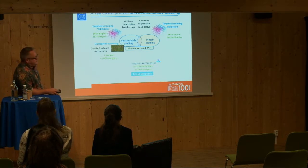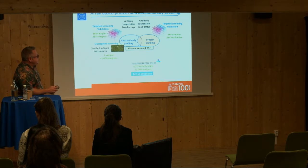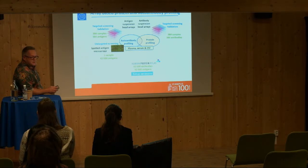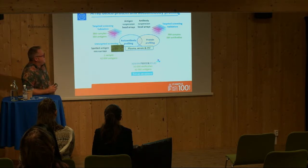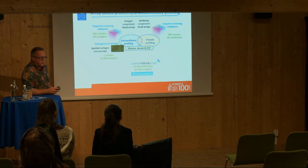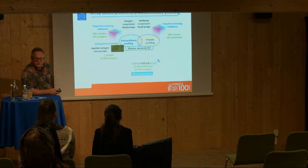Putting all these array technologies together: we use one sample on 42,000 antigens as an untargeted screening using spotted antigen microarrays within the field of autoantibody profiling. We can also use the beads for more targeted screening, where we have the antibodies on the beads and do protein profiling. So we either analyze proteins or we analyze autoantibodies in these large numbers.